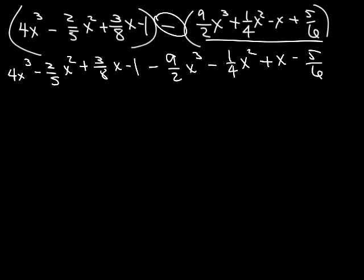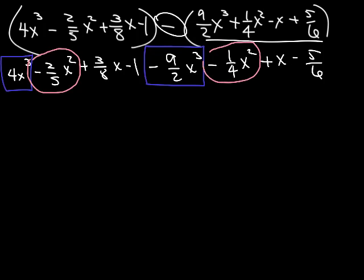So, let's look at our like terms. I have a 4 x cubed and a negative 9/2 x cubed that I can combine because those are alike. And I have a negative 2/5 x squared and a negative 1/4 x squared. So, I can combine those two. I've got a positive 3/8 x and a positive x. So, I can combine those two.